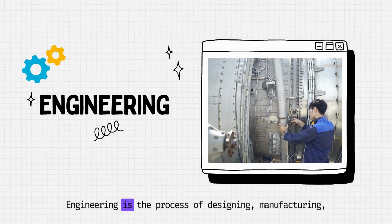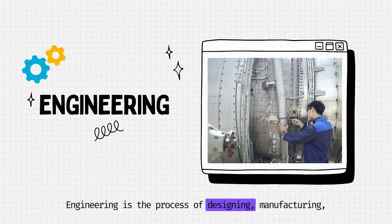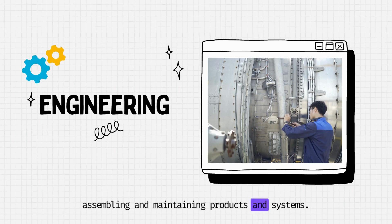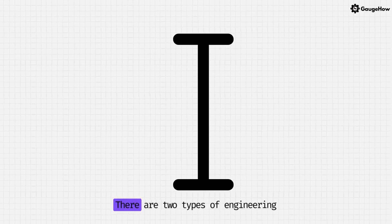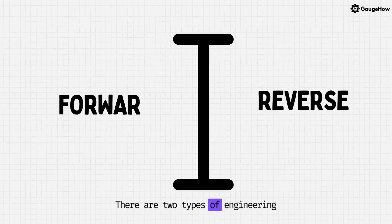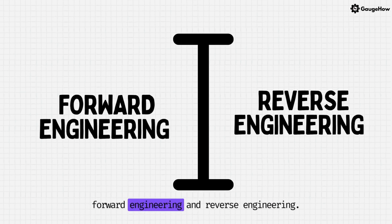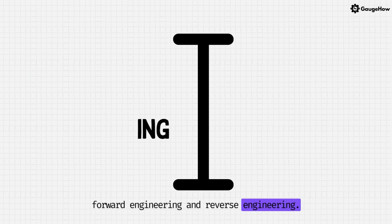Engineering is the process of designing, manufacturing, assembling and maintaining products and systems. There are two types of engineering: forward engineering and reverse engineering.